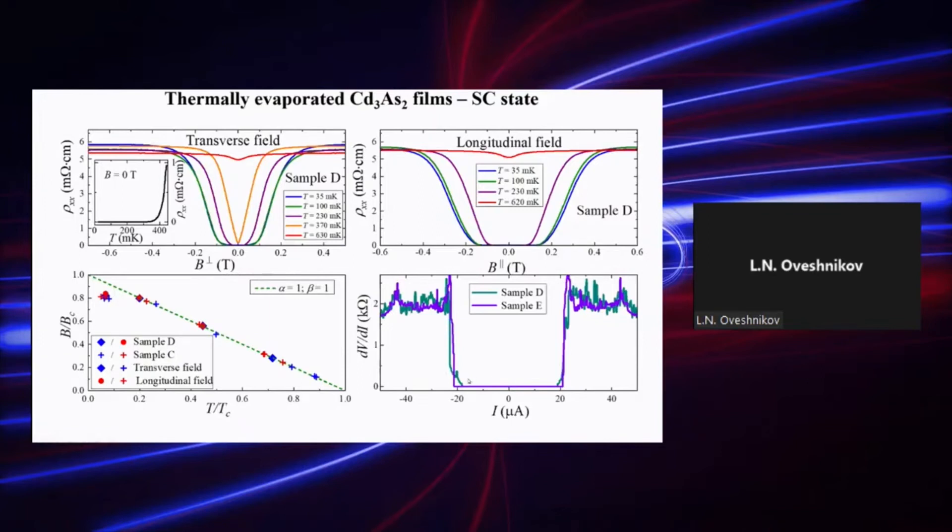And measured critical current in this case was estimated as about 20 microamperes. So, it's also quite similar to that observed for magnetron-sputtered ones. Therefore, we reproduced this state, superconductive state, on the totally different samples made from different precursors by different methods.